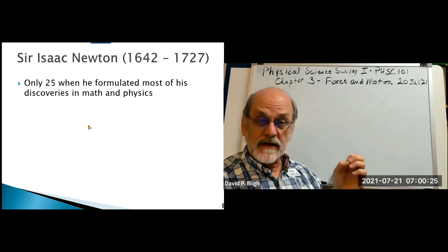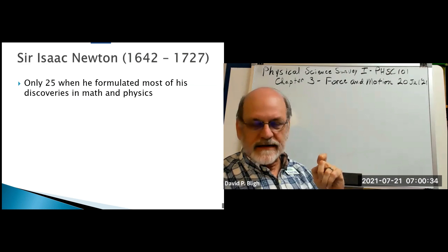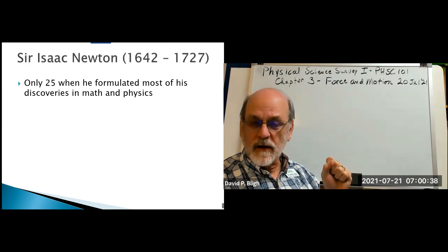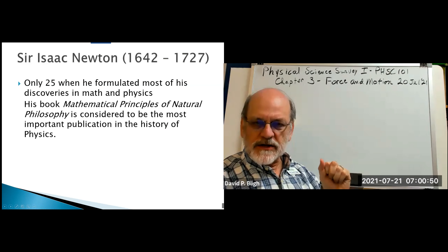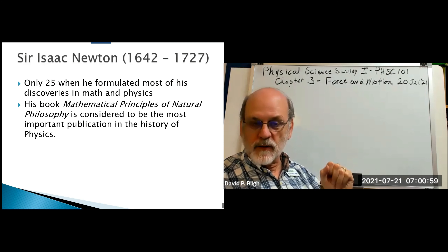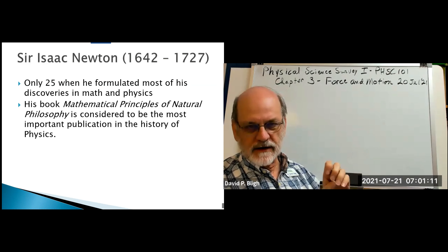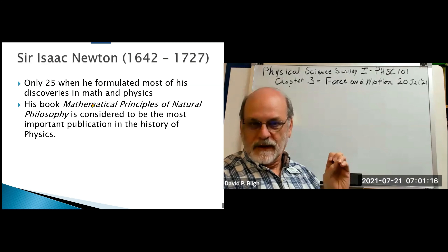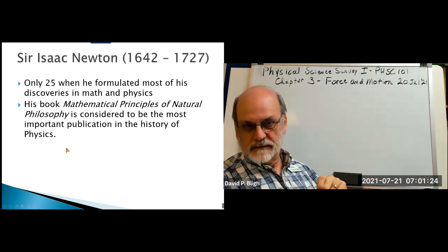Simultaneously, a German named Leibniz developed the same mathematics. In fact, the math was identical, but the notation we use today actually came from Leibniz. When Newton published his masterwork — in two volumes titled Mathematical Principles of Natural Philosophy — he did so in Latin, the common language among natural philosophers. It will often be referred to simply as the Principia, which refers to principles.